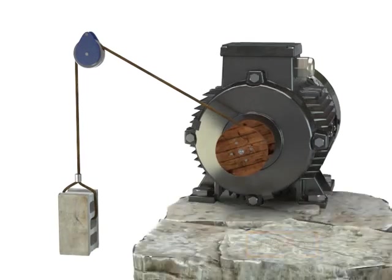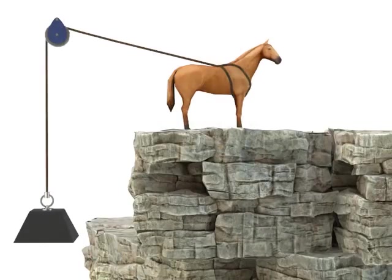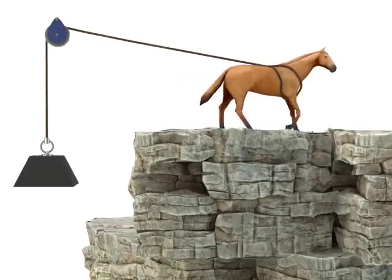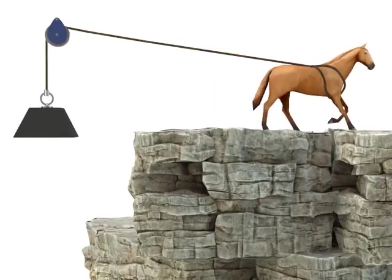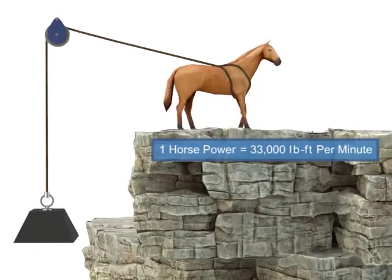Horsepower is defined as the rate at which work is accomplished. Years ago, before motors were invented, most work was accomplished manually. It was estimated that one horse could accomplish approximately 33,000 pound foot of work per minute, and thus the term horsepower was born.